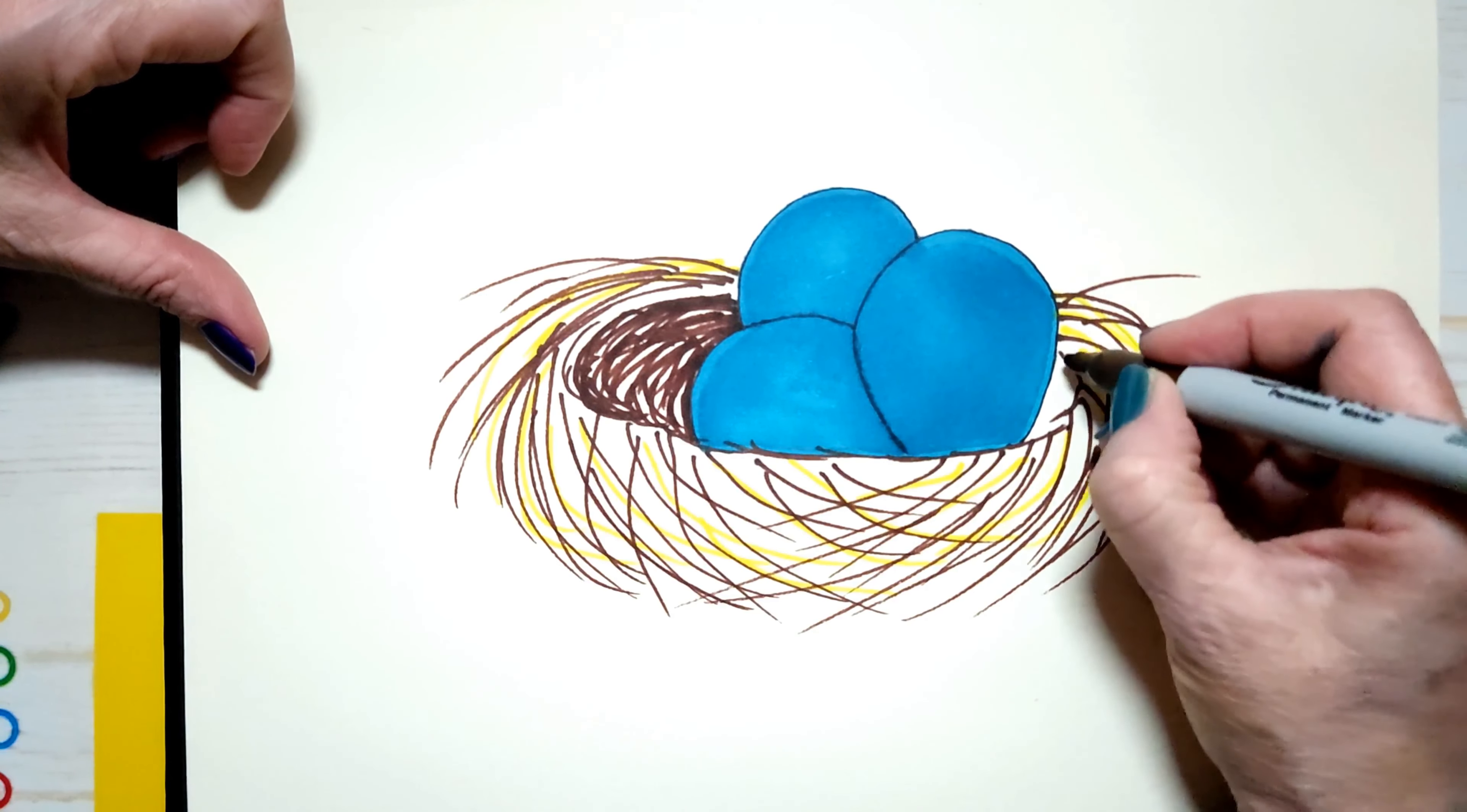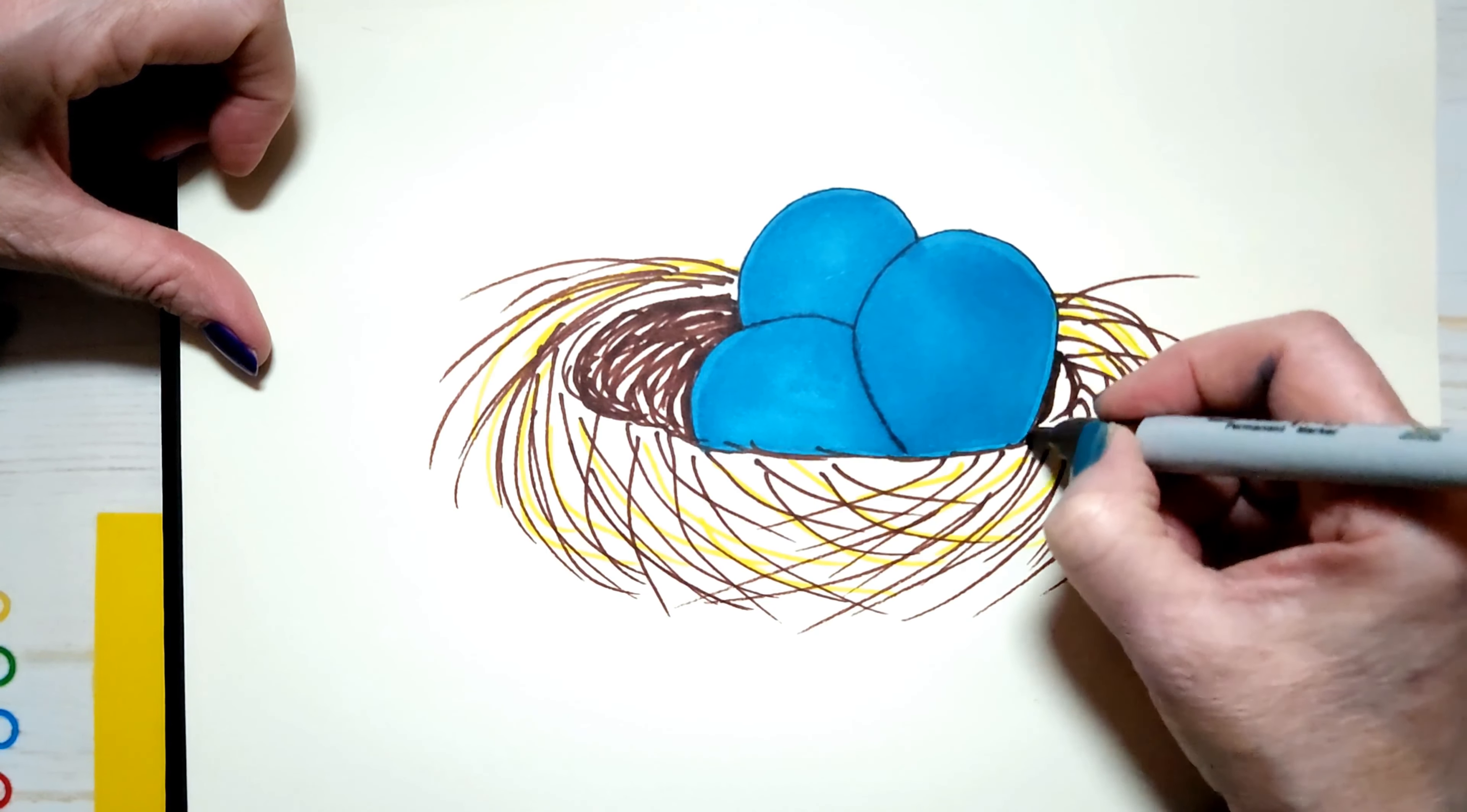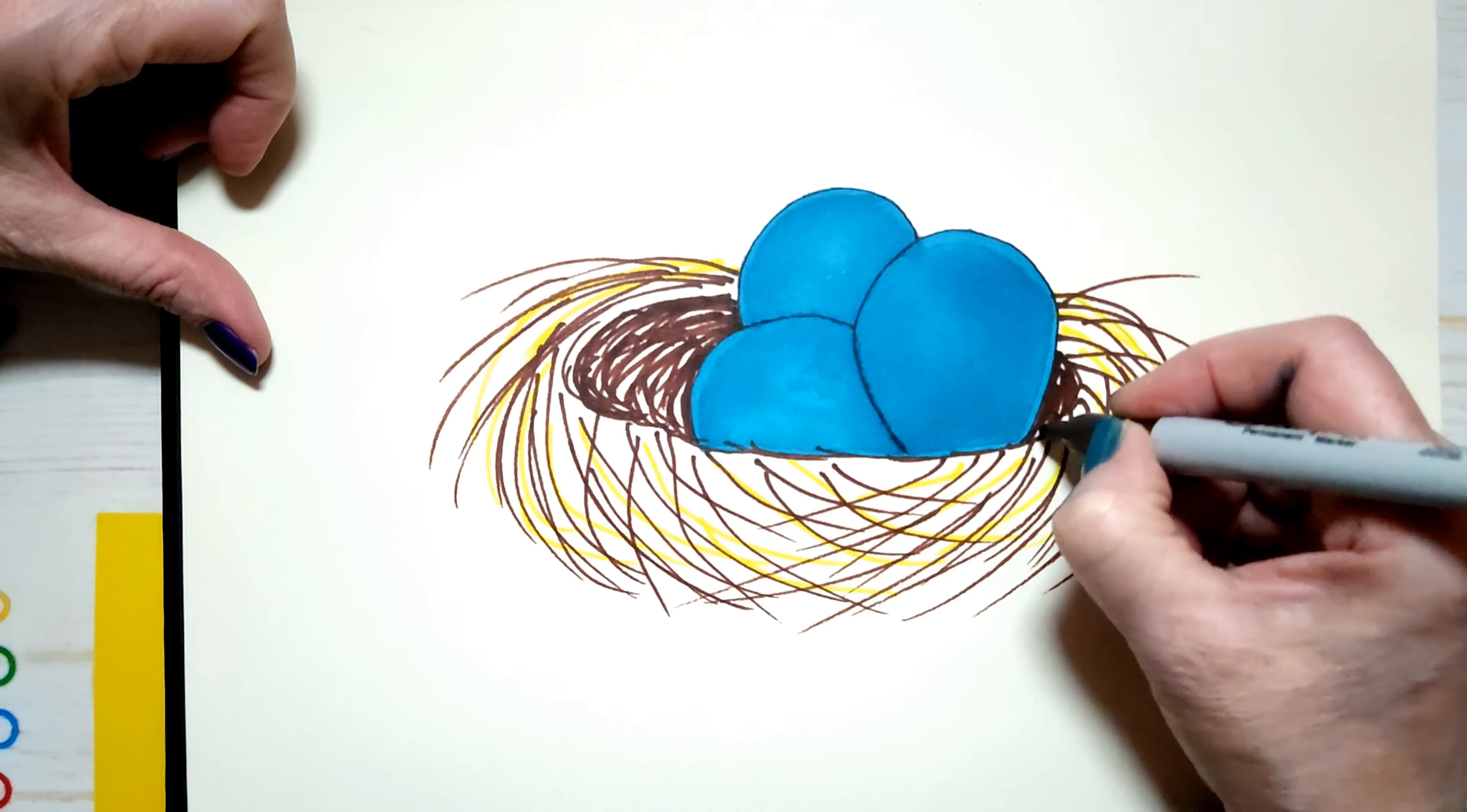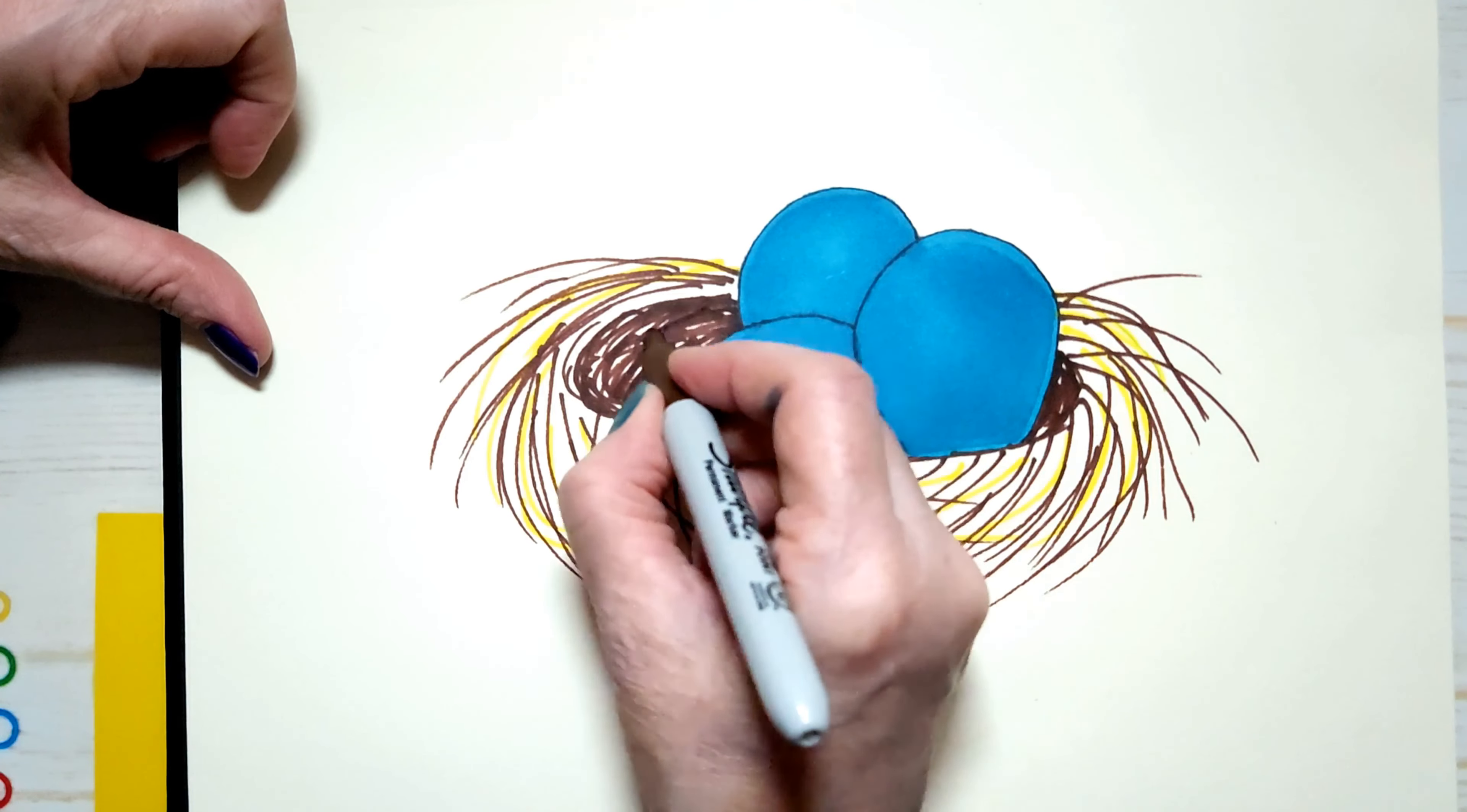There we go. And there's a little spot here that I will also do. There. I want to leave a little bit of the page showing through. I'm not going to color it in solid.